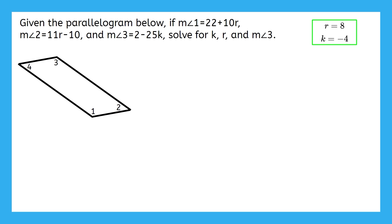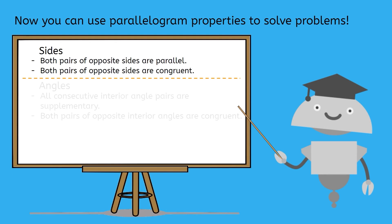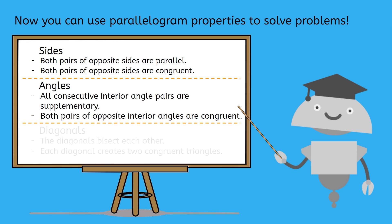Not quite yet. We still have to solve for the measure of angle 3. Since I now know that K is negative 4, I can just take my expression for the measure of angle 3 and substitute negative 4 for K. Then simplify to get that the measure of angle 3 is 102 degrees. I have three parts to my final answer for this problem. R equals 8, K equals negative 4, and the measure of angle 3 is 102 degrees. Now you can use parallelogram properties to solve problems. Be sure to keep these 6 properties close by when you complete your practice. See you next time!